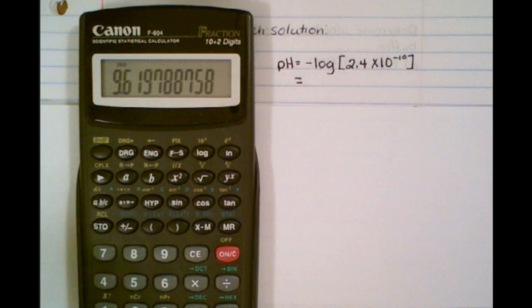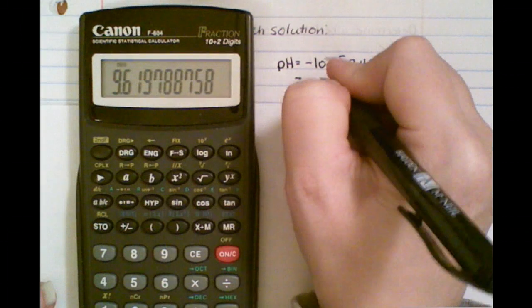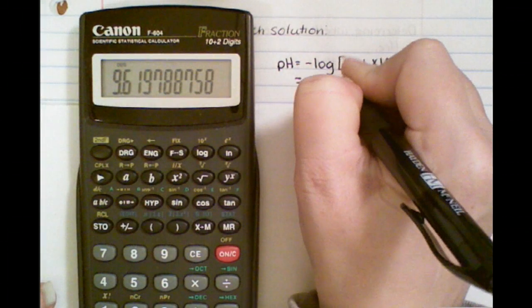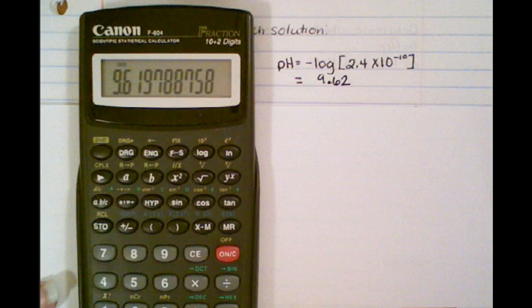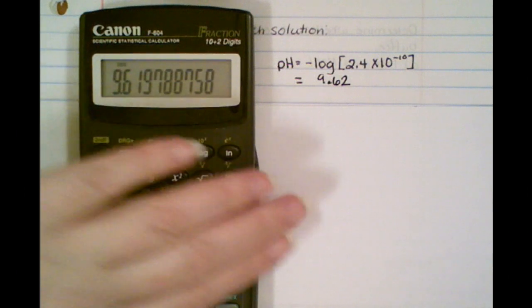Now, you're always going to have two digits after the decimal with log. So the final answer here is going to be 9.62. So that's your pH for the first one.